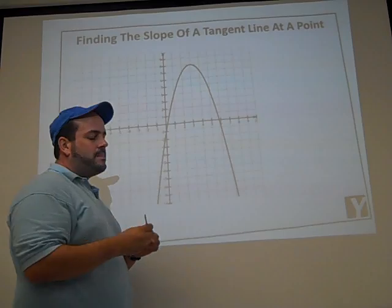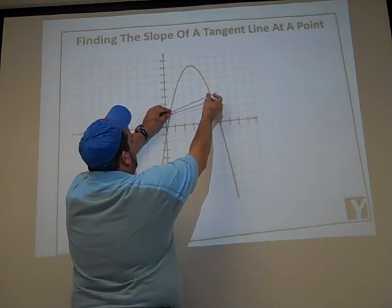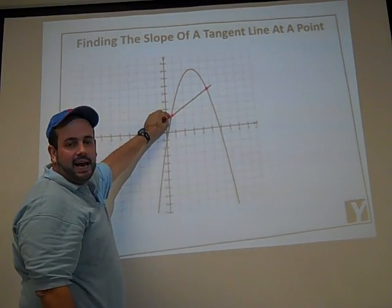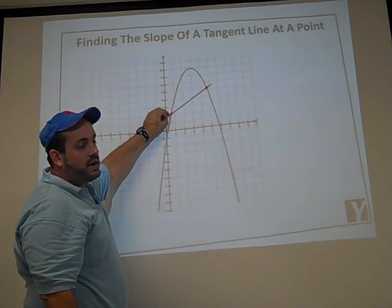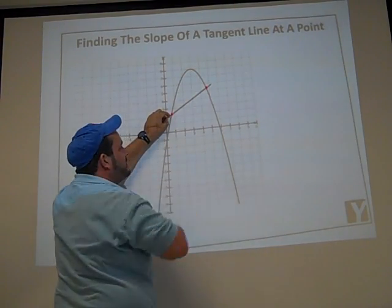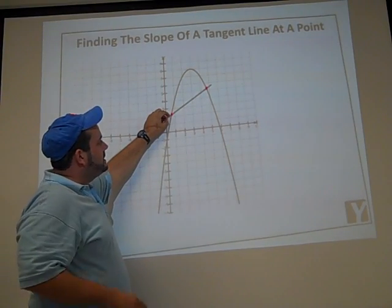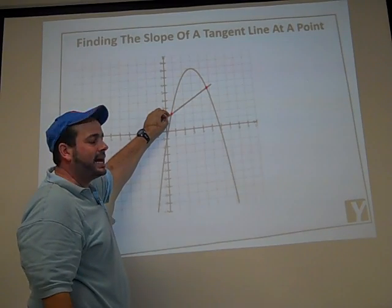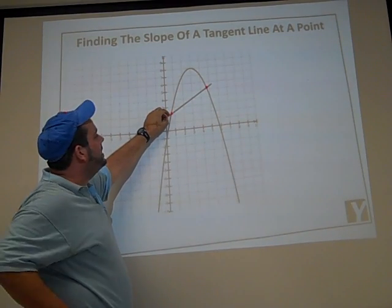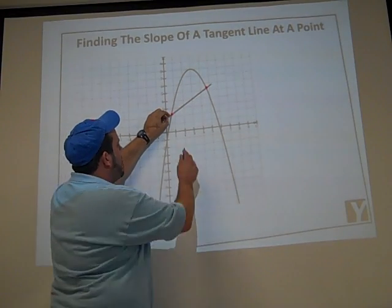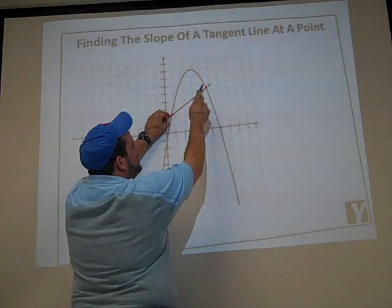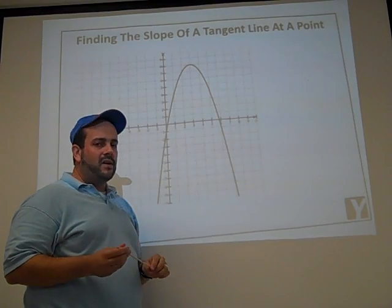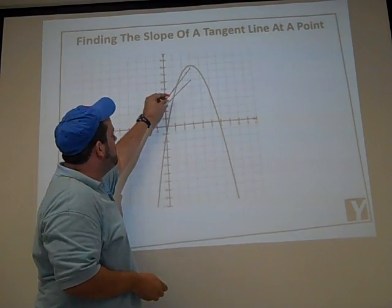In pre-calculus we started talking about this same line now as a line that intersects a graph. For example, we have the graph of a parabola. The line I'm showing right now actually intersects the graph twice — that's what the pink beads represent, the intersection points. Since the line intersects the graph in two places, we're going to call this a secant line. To find the slope of a secant line we still do change in y over change in x: y₂ minus y₁ divided by x₂ minus x₁.